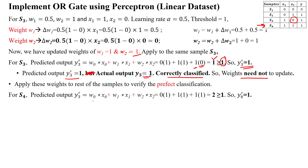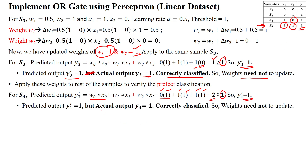Checking sample 4 with the newly updated weights w1=1, w2=1: x1=1, x2=1, so w0·x0 + w1·x1 + w2·x2 = 0 + 1·1 + 1·1 = 2. Since 2 is greater than or equal to 1, the predicted output is 1. Comparing with the actual output — both match. Sample 4 is correctly classified and weights need not be updated.